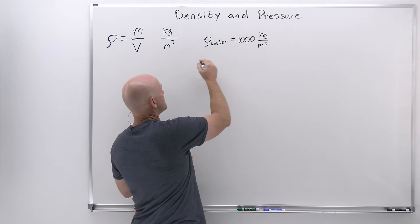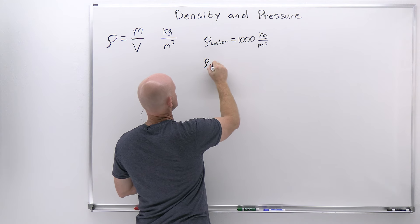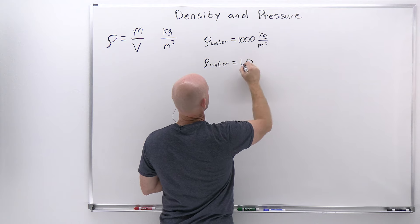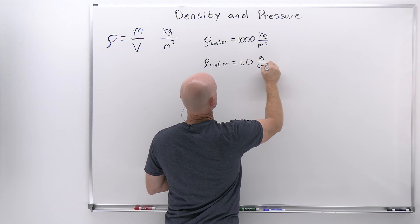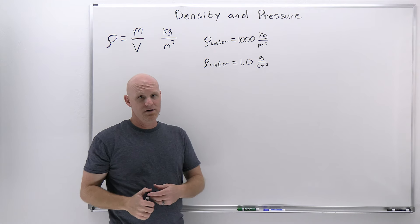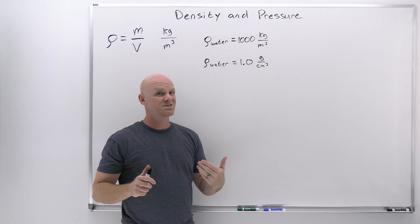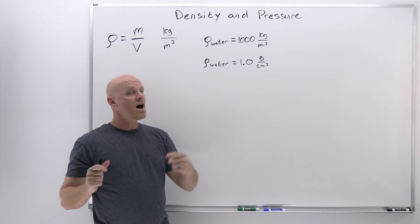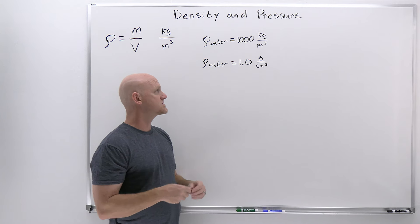One other thing to note: it's common, especially in chemistry, to see densities in a different unit. In chemistry we more commonly see them in grams per cubic centimeter. You need to be able to convert between units. Students sometimes struggle with this — it's not the conversion of grams to kilograms that trips them up, it's the conversion of centimeters cubed to meters cubed.